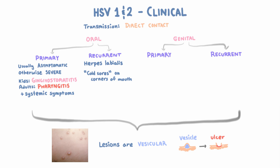Most of the time, oral herpes is acquired early in life, whereas genital herpes is acquired later in life. Primary and recurrent genital herpes follow the same pattern as the oral infections — the primary infection can be asymptomatic or severe with systemic symptoms, while the recurrences are less severe.